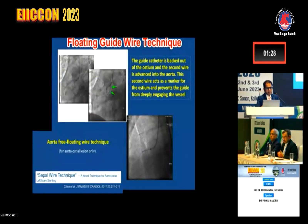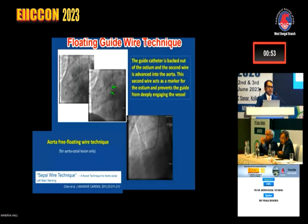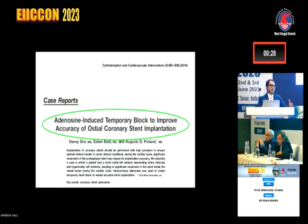There is also the septal wire technique or floating guide wire technique — we place one wire in the coronary or in the aorta at the ostium, hanging free. This serves two purposes: first, it acts as a landmark for the ostium; and second, it prevents the guide from being pushed in during stent implantation. So the floating guide wire technique is very useful to define the ostium, place the stent, and prevent missing the ostium. When there is a motion artifact and the stent is moving, we can inject adenosine to cause temporary asystole for a few seconds — those seconds can be utilized for placing the stent right at the ostium, nullifying motion artifacts.